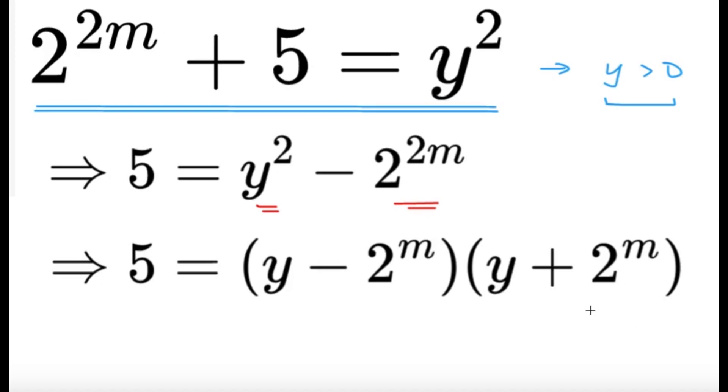Now here's where the part where m and y, they're going to both be positive, come into play. Because as I mentioned, y and 2 raised to m, they're both positive. So I'm pretty sure this factor is going to be positive. Since this factor is positive, I'm pretty sure this must be positive as well, because they multiply to a positive number, which is 5. Now the other observation we can make is that I'm pretty sure this one, the y plus 2 raised to m, is going to be greater than y minus 2 raised to m. Because again, y and m are positive integers. The last thing to observe is that we have 5 here on the left-hand side. Now 5 is a prime number.